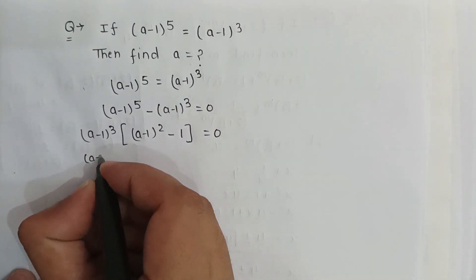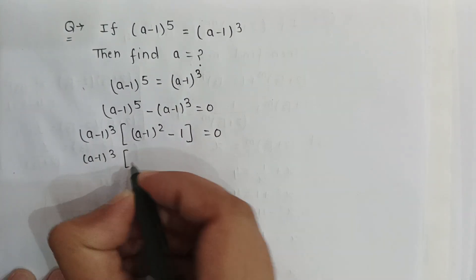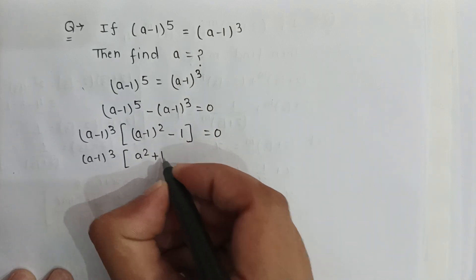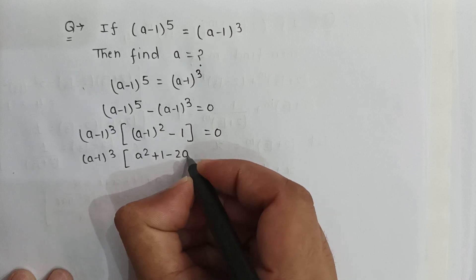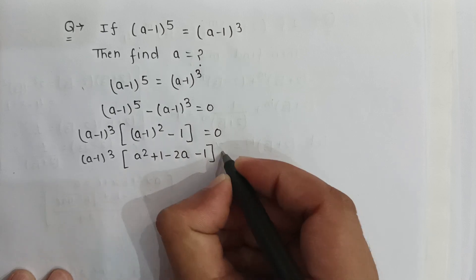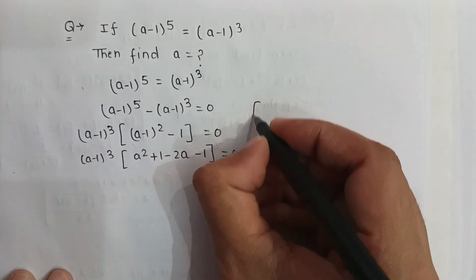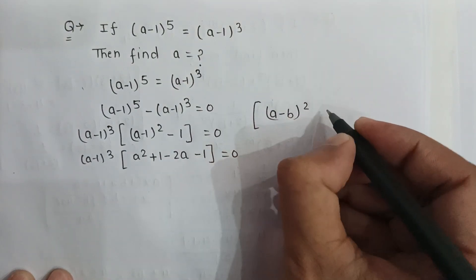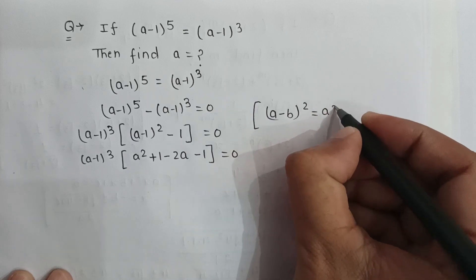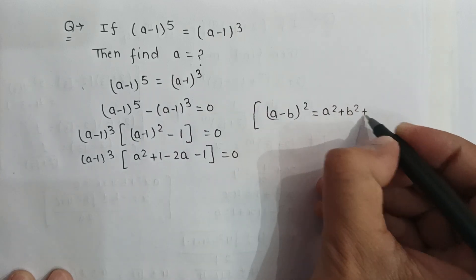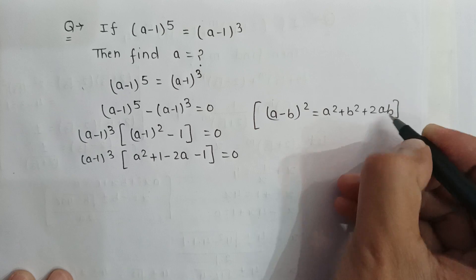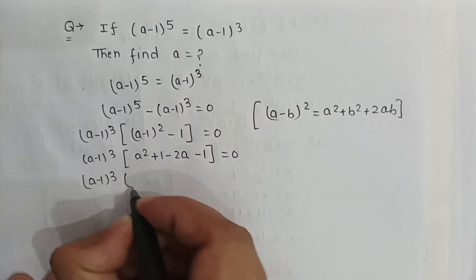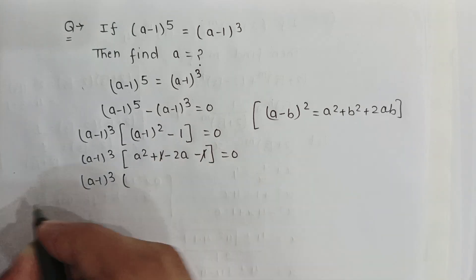So here, (a minus 1) to the power 3 multiplied by [a squared minus 2a plus 1 minus 1] is equal to 0, because as we know that (a minus b) whole squared can be written as a squared plus b squared minus 2ab. So the terms cancel out.